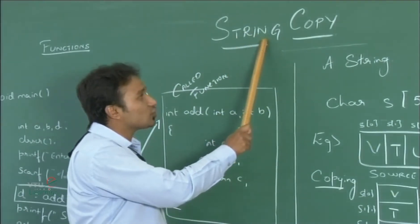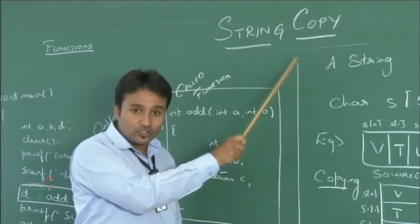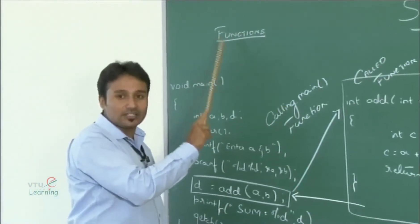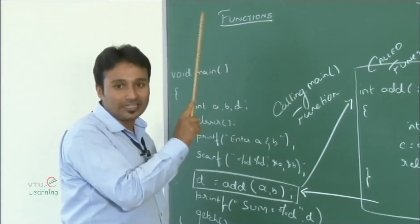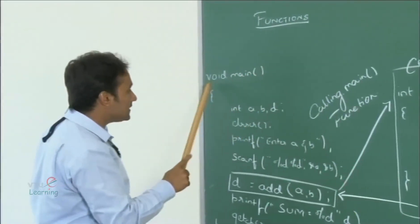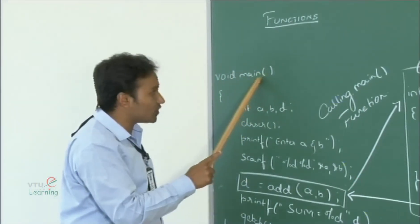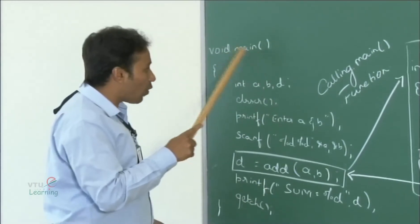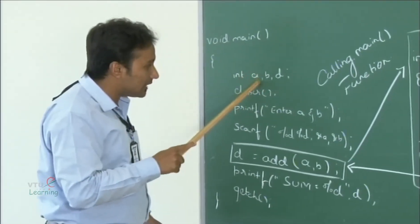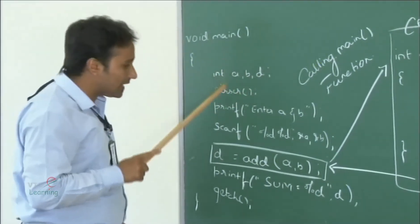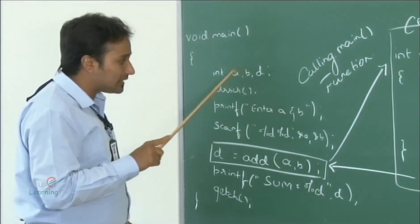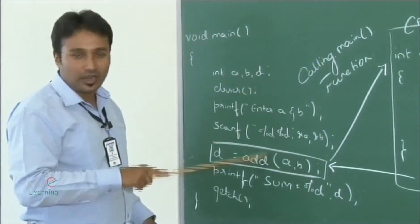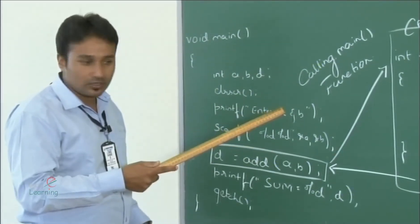Now we will study the logic of the string copy function. Before understanding it, we will discuss what functions are. A function is a group of statements that together performs a common task. Consider a void main function — one of the famous functions we have studied, from where execution of the program starts. Inside void main we have declared variables a, b, and d of integer data type, and we need to add two numbers a and b and store the result in variable d without direct addition.